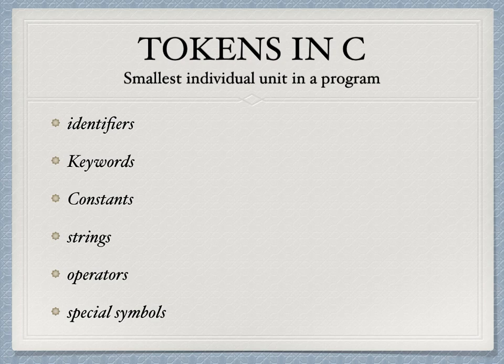We know that the user controls the computer through programs, but the instructions given by the user should always be understandable by the compiler. Each instruction in a program is formulated by tokens. Tokens are the smallest unit in your program. The different tokens we use are identifiers, keywords, constants, strings, operators, and special symbols.